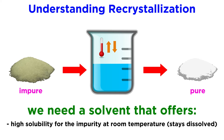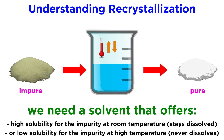In addition, the ideal situation involves an impurity that is soluble at room temperature, so that it remains in solution even when it cools, and has no opportunity to precipitate along with the desired product. Or similarly, the impurity could remain insoluble even at the higher temperature, so that once the solid dissolves, we can simply remove the solid impurity by filtration.